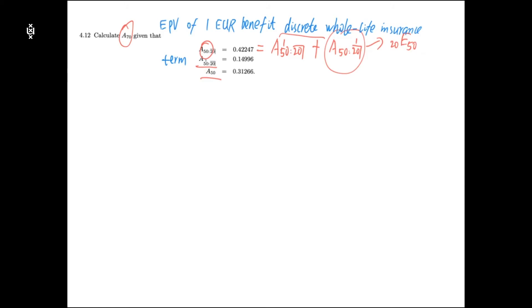In this exercise we need to calculate A70. In fact, A50, A70 and the term insurance are related in the following way. When we think about the present value of whole life insurance for age 50 you can split it, looking at the first 20 years and the years afterwards.